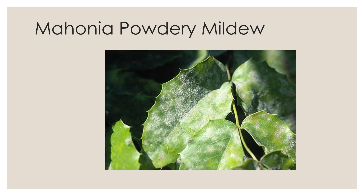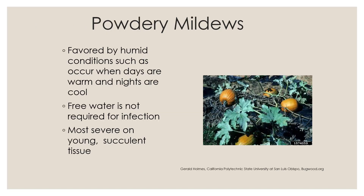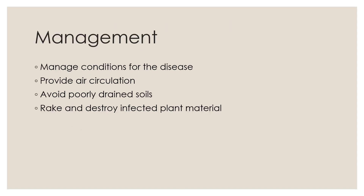Mahonia also commonly gets powdery mildew. The disease is favored by humid conditions — warm days and cool nights — which is why you often see it on squash at the end of summer. It doesn't need free water, and it prefers young succulent tissue, so over-fertilizing can increase the problem.